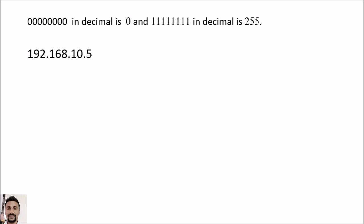For example, 192.168.10.5 is a valid IP address. However, 192.259.10.5 is not a valid IP address because 259 is not between 0 and 255.